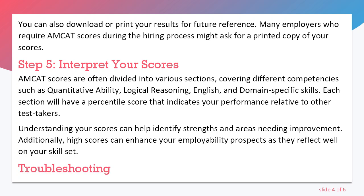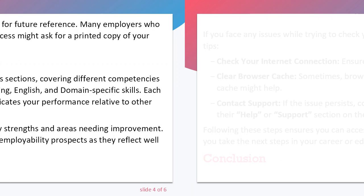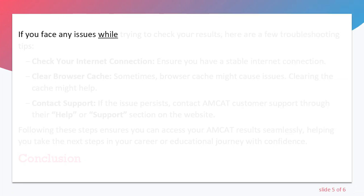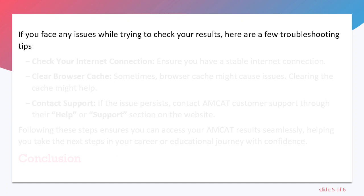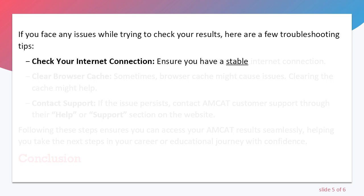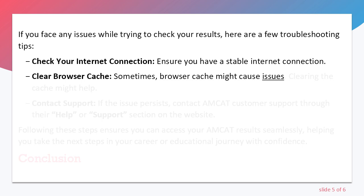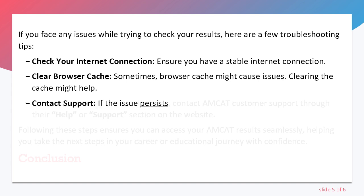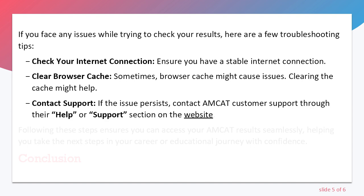Troubleshooting. If you face any issues while trying to check your results, here are a few troubleshooting tips. Check your internet connection to ensure you have a stable connection. Clear browser cache, as it might cause issues — clearing the cache might help. If the issue persists, contact AMCUT customer support through their help or support section on the website.